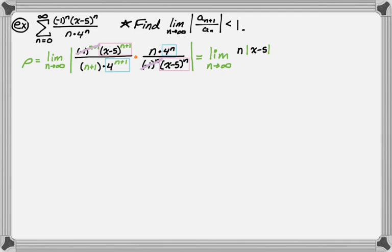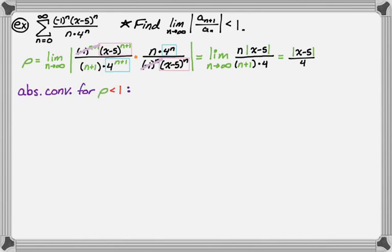The n+1 stays, and 4 to the n over 4 to the n+1 leaves us with a factor of 4. As far as the limit is concerned, the absolute value of x minus 5 is just a constant, and 4 is a constant, so we're really taking the limit of n over n+1, which is 1. So all that's left is the absolute value of x minus 5, all over 4. That's what rho simplifies to, and we get absolute convergence when rho is less than 1.